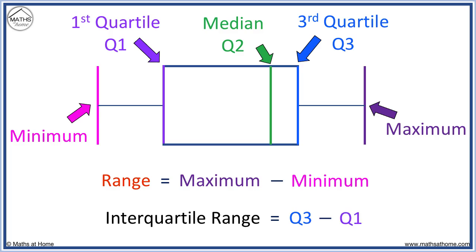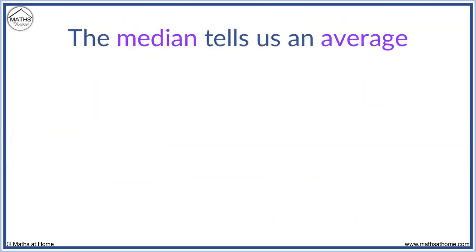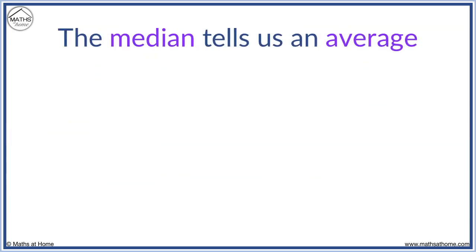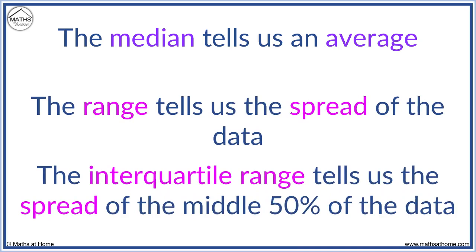We can use these measurements to compare box plots. The median tells us an average. The range tells us the spread of data, while the interquartile range tells us the spread of the middle 50% of the data.